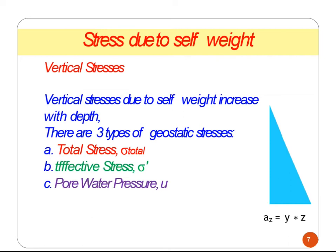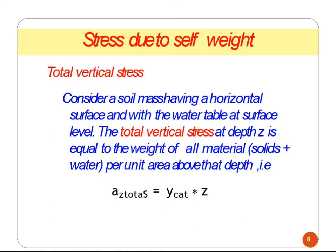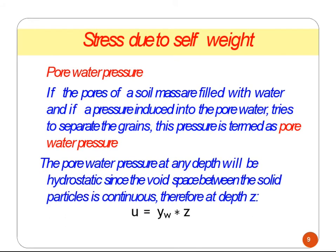We need to analyze the stress distribution of soil. For total vertical stress, we consider soil having a horizontal surface with a water table at surface level. The total vertical stress at depth Z is equal to the weight of soil material plus water. When water is present in the soil, the total stress at depth Z equals γsat × Z, where γsat means the saturated soil mass unit weight — the unit weight at saturated condition. Next is pore water pressure: if the pores of the soil mass are filled with water, the pressure induced in the pore water tries to separate the grains; this pressure is termed pore water pressure.